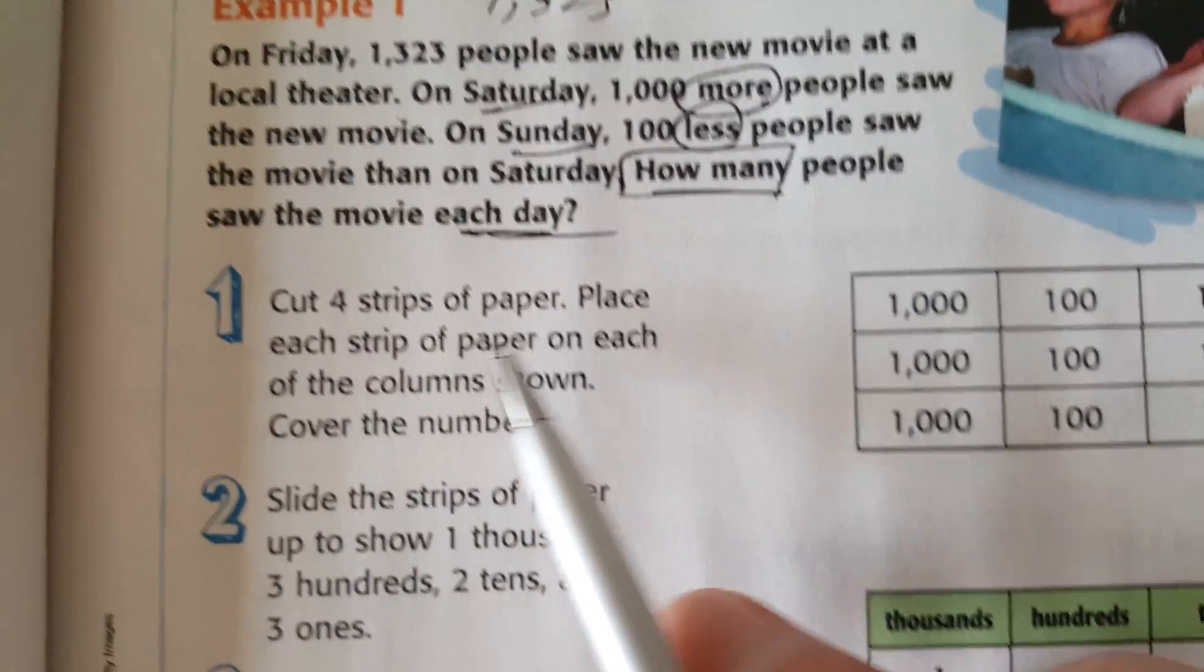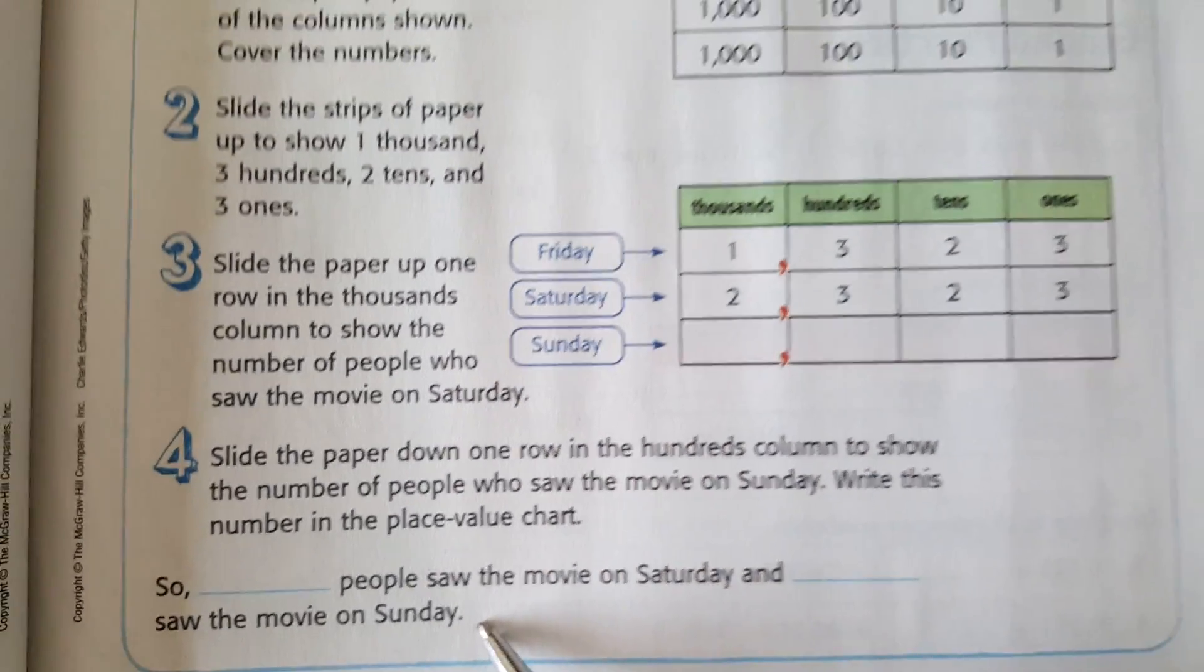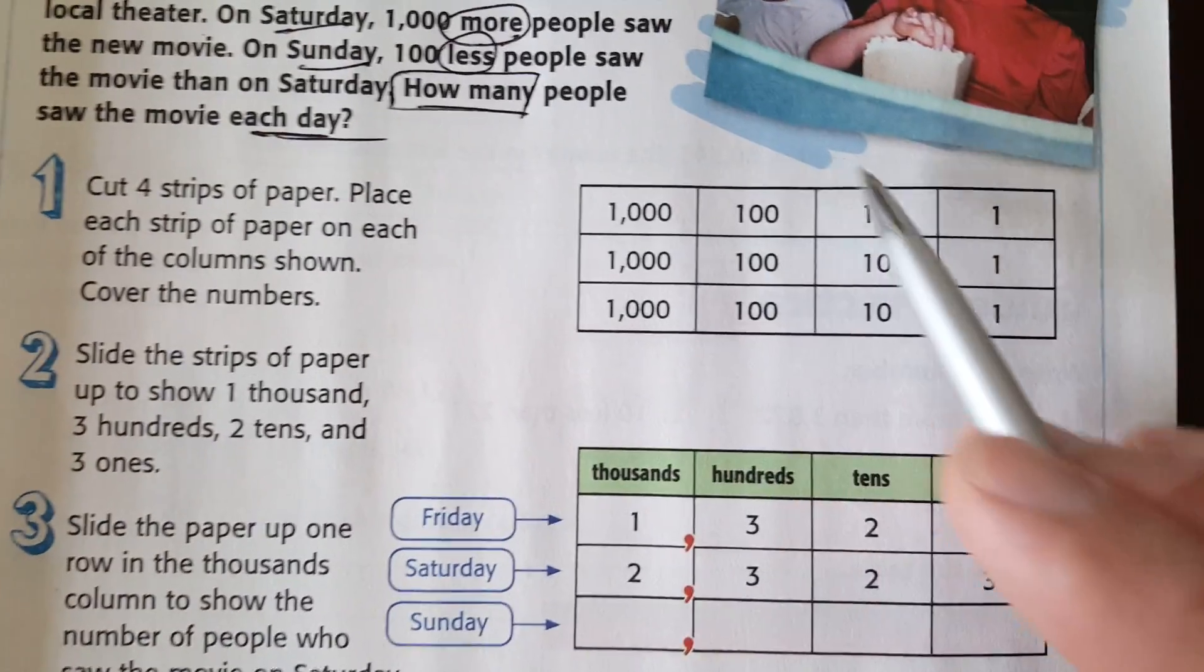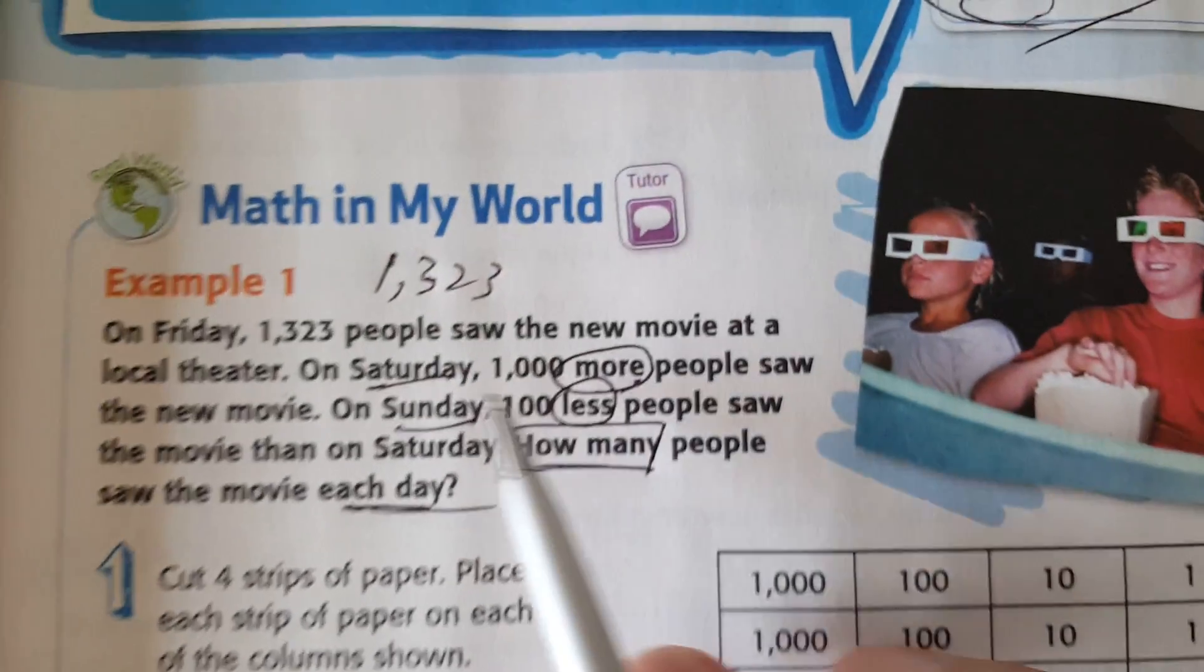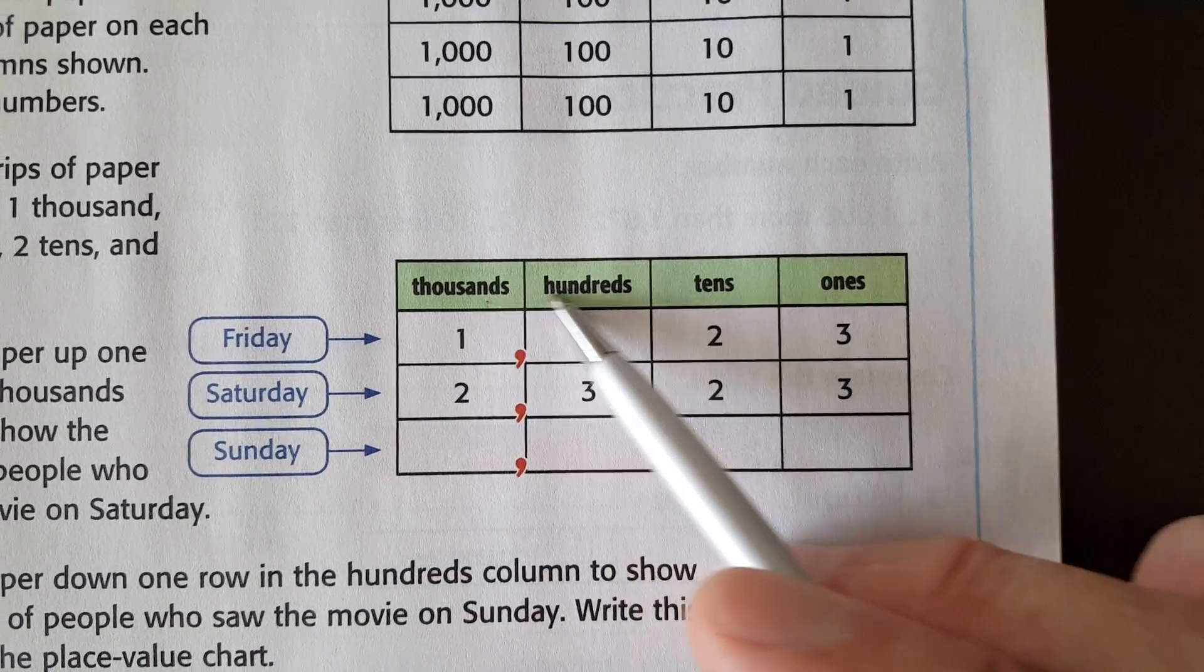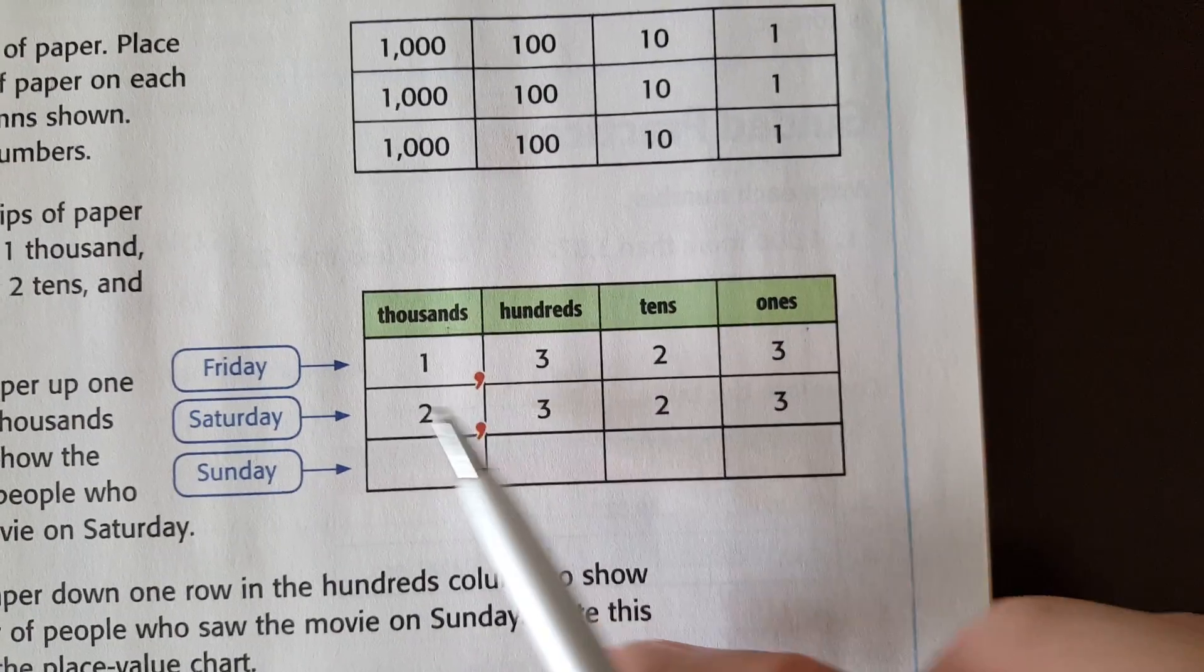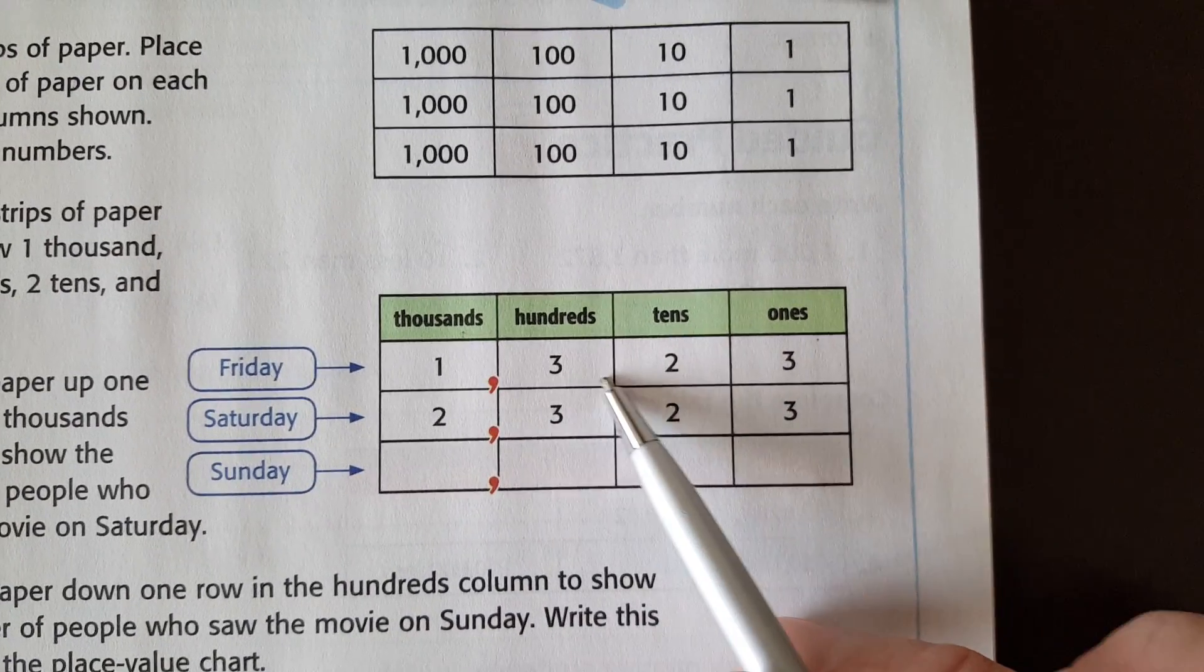Now they go through a series of cutting strips. And here's the reality. You're not going to do that on a state test. You're not going to have time. So right away, you write out the number on Friday. And then they show you that your place value, which has been a theme for chapter one and two, is important. So on Friday, they wrote it out 1,323.